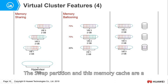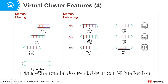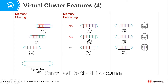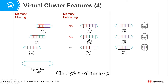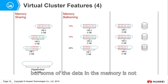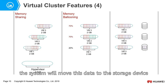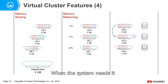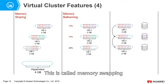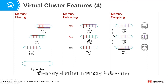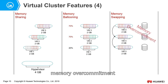The swap partition and memory cache are a mechanism for optimizing memory usage, and this mechanism is also available in our virtualization cluster. Coming back to the third column: Virtual Machine 3 has already obtained 2 GB of memory, but some data in the memory is not used frequently. The system will move this data to the storage device, and when needed, transfer it back from storage to memory. This is called memory swapping. Memory sharing, memory ballooning, plus memory swapping add up to our fourth feature: memory overcommitment.